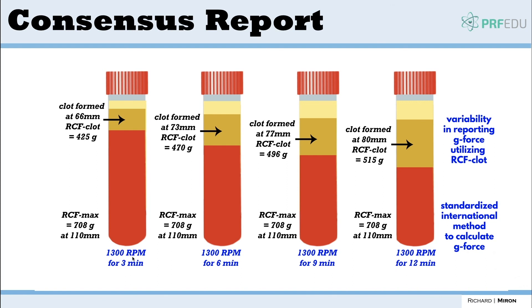Here's a little cartoon diagram illustrating this: at exactly 1300 rpm, whether you spin for three, six, nine, or twelve minutes, if you calculate at the RCF max it's always exactly the same. But if you calculate at the clot, because the clot gets bigger over time, the RCF value at the clot keeps changing. You're much better off reporting at the max where it's always constant, versus at the clot where it changes depending on the time used — which is why our group recommends simply reporting all RCF values at the max, consistent with international standards.